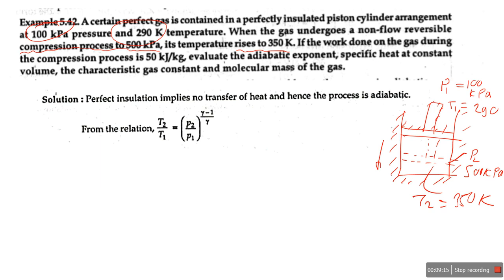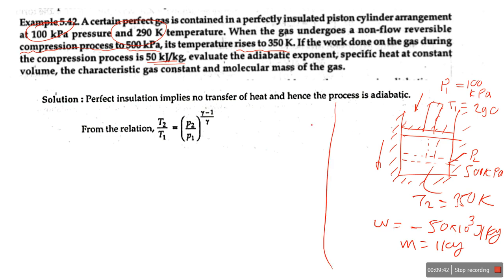The work done on the gas during the compression process is 50 kilojoule per kg. Since work is done on the system during compression, it is negative: -50×10³ joule per kg, and mass is 1 kg. We need to find the adiabatic exponent gamma, specific heat at constant volume CV, the characteristics gas constant R, and the molecular mass M of the gas.